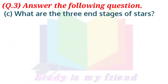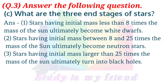C. What are the three end stages of a star? Answer: 1. Stars having initial mass less than 8 times the mass of the sun ultimately become white dwarfs. 2. Stars having initial mass between 8 and 25 times the mass of the sun ultimately become neutron stars. 3. Stars having initial mass larger than 25 times the mass of the sun ultimately turn into black holes.